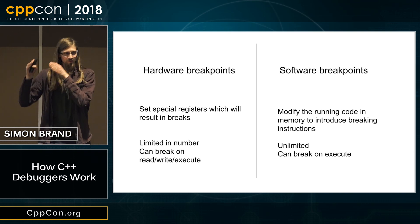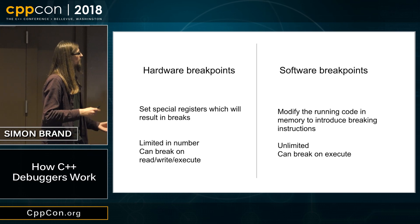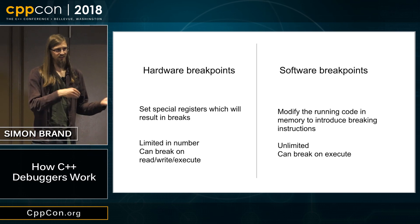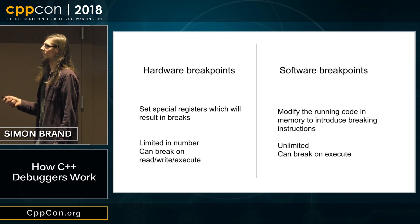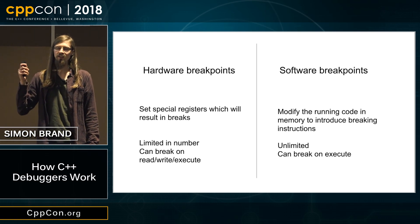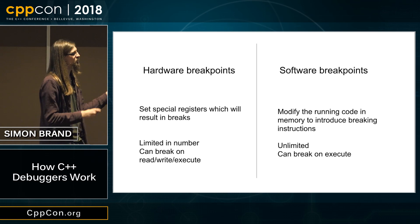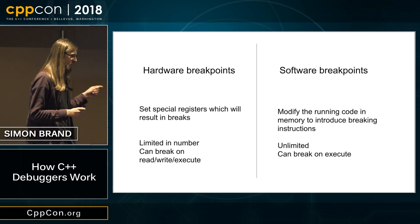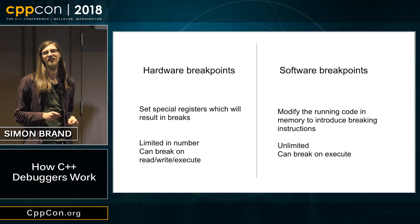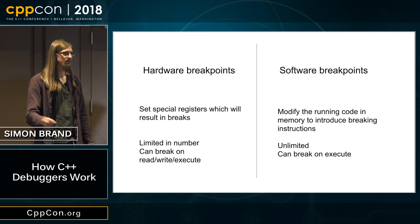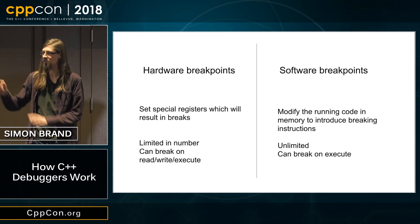Hardware breakpoints are limited because you're using physical registers and you only have so many. Software breakpoints, because you're just dealing with memory, are essentially unlimited. The cool thing about hardware breakpoints is that you can set them to break on reading, writing, or executing an address, whereas software breakpoints are only on execution. So if you want to be notified every time an address is changed — which can be really useful for tracking down weird bugs — you can only really do that with hardware breakpoints.